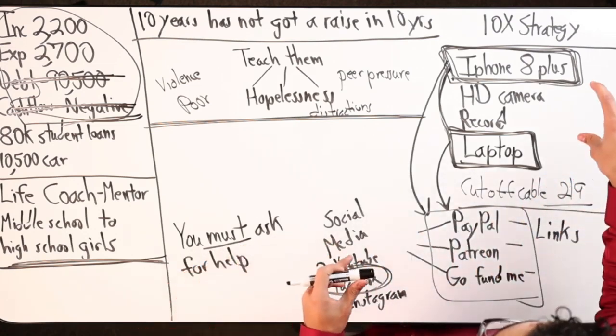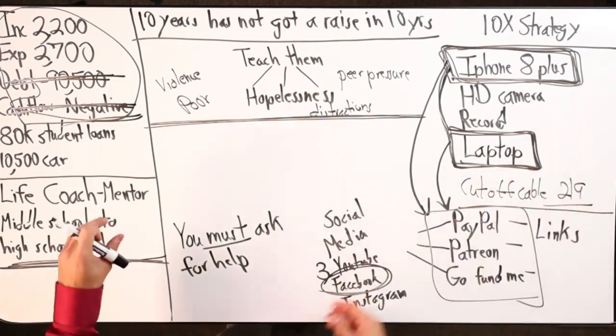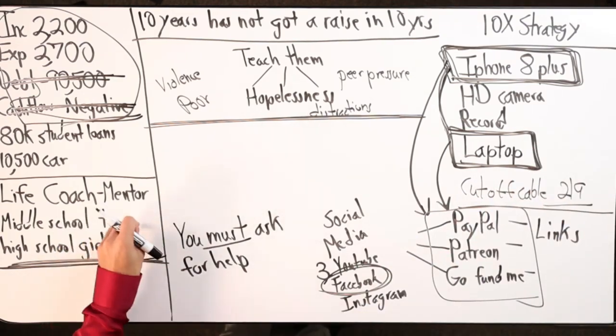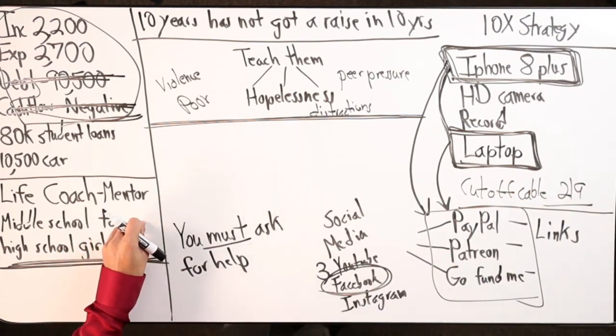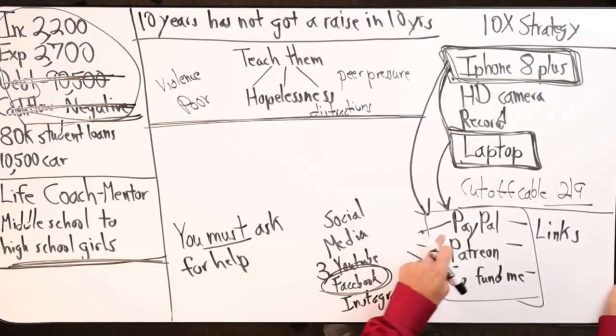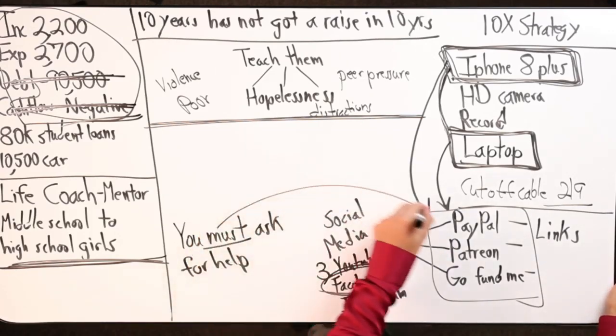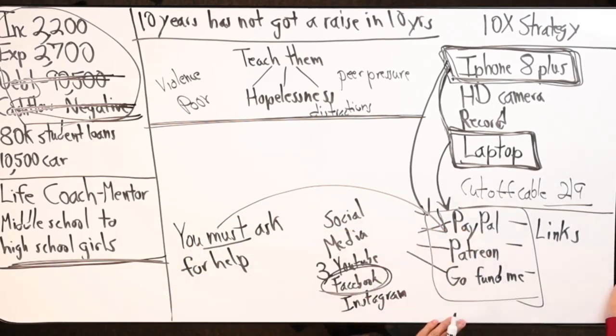So when you apply this, the money making machines, you get this down, you get your message down. It doesn't take that long to get your message down. All you got to do is say it multiple times. Just say it, but record yourself. Because if you don't record yourself, nobody knows. So you got to stick to it. And then you got to ask for help.